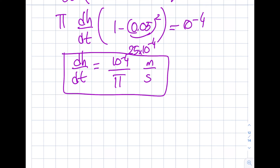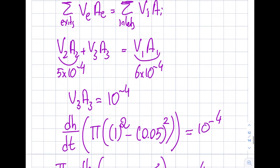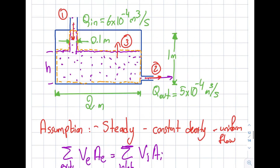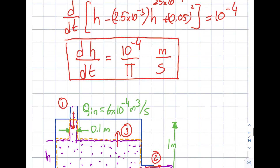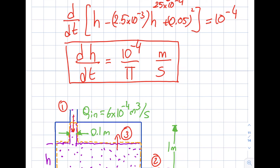So the final answer is dh/dt = 10⁻⁴/π m/s. I'm not going to pretend that was an easy question — this is one of the harder questions I've solved from the conservation of mass equation.